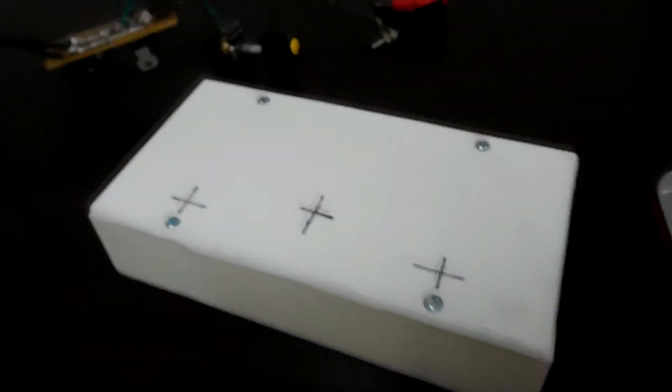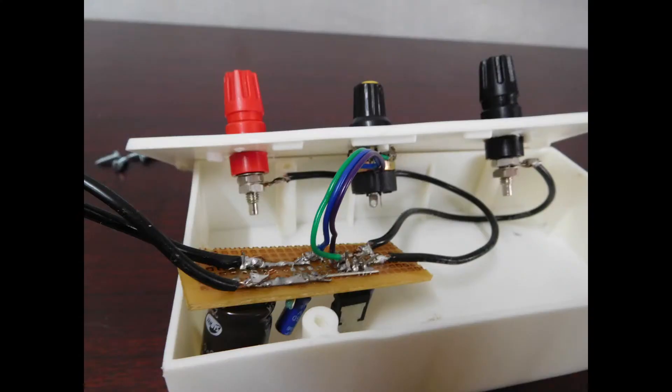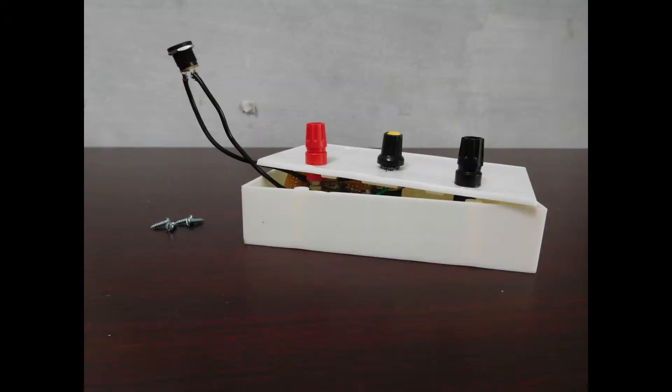I marked lines for holes and made holes with hot screwdriver. I screwed the binding post, DC jack and the potentiometer to the front of the case.